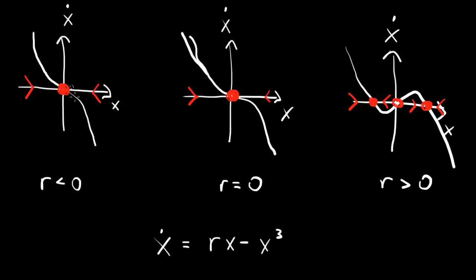So what has happened in this bifurcation? When r is negative, we have one fixed point at the origin, which is stable. As r goes through zero it's still stable, but when r becomes positive, this one stable fixed point becomes unstable and we generate two symmetric stable fixed points on both sides.